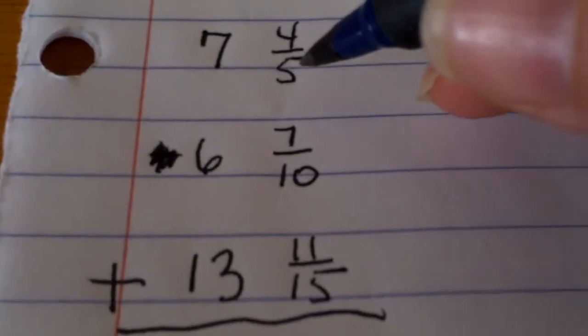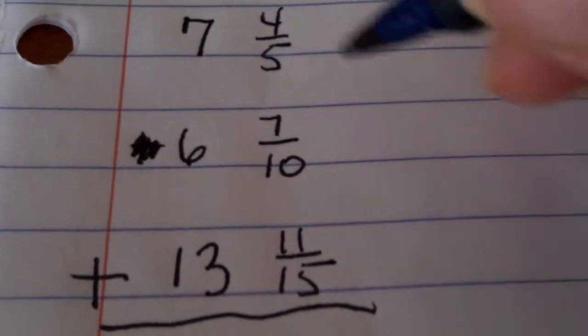Now, you can handle it. Again, the first thing you have to do is find a common denominator. We have a 5, a 10, and a 15.